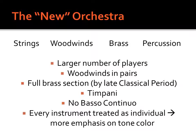This new orchestra developed because there were new instruments to use and larger numbers of players able to play them at a high level. The new orchestra had a higher number of players, always had woodwinds in pairs, a full brass section by the later classical period, and timpani. The one thing it did not have was basso continua, which went out of style. One of the most important things about this new orchestra was that every instrument was treated as an individual sound-producing instrument, with much more emphasis on tone color rather than simply ensemble playing behind soloists.